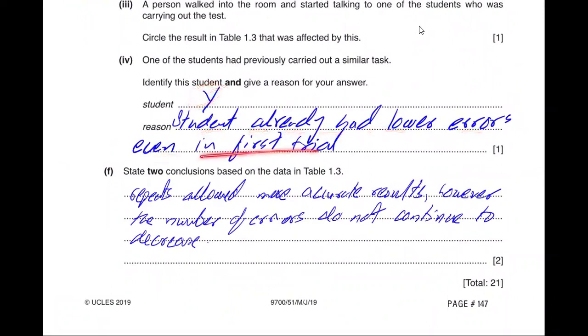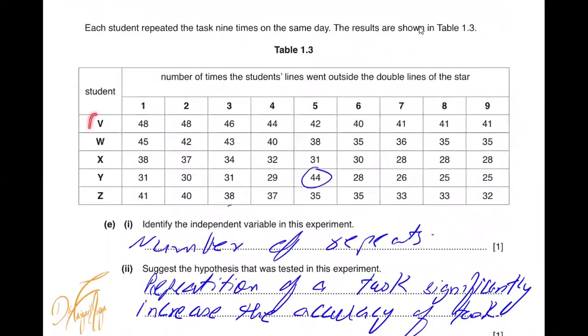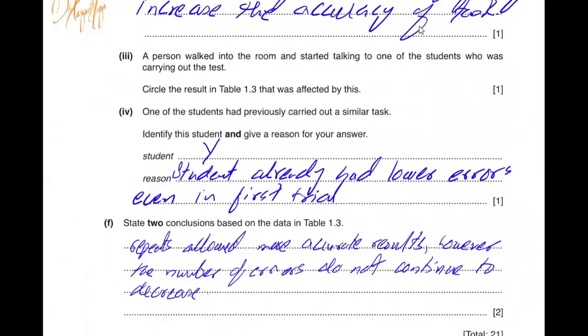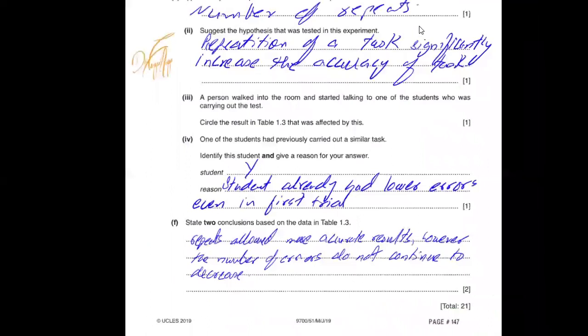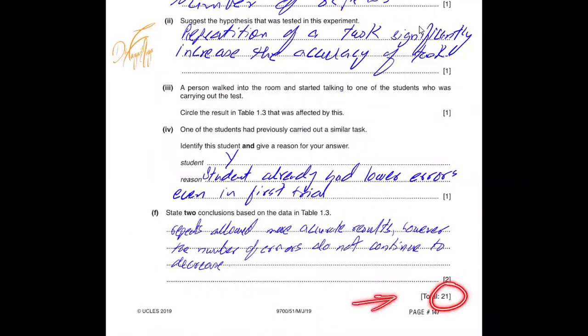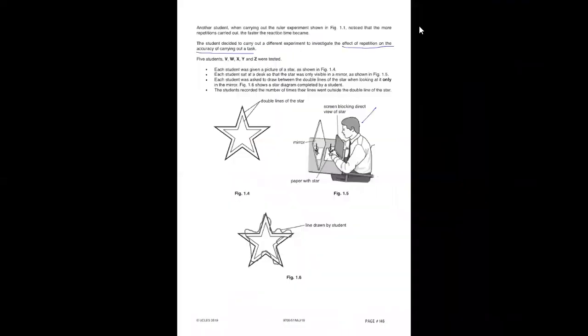State a conclusion based on the data in table 1.3. Repetition allows more accurate results however the number of errors do not continue to decrease. You can see that the student w at the seventh repeat is getting 41 but at 8 and 9 again he or she is getting 41. This is the best the student could do. Repetition will not keep on decreasing the errors to infinity. Obviously a time will come when the errors will become minimized and they cannot get better anymore or any further. Repetition improves the task but then eventually it will not keep on decreasing forever.